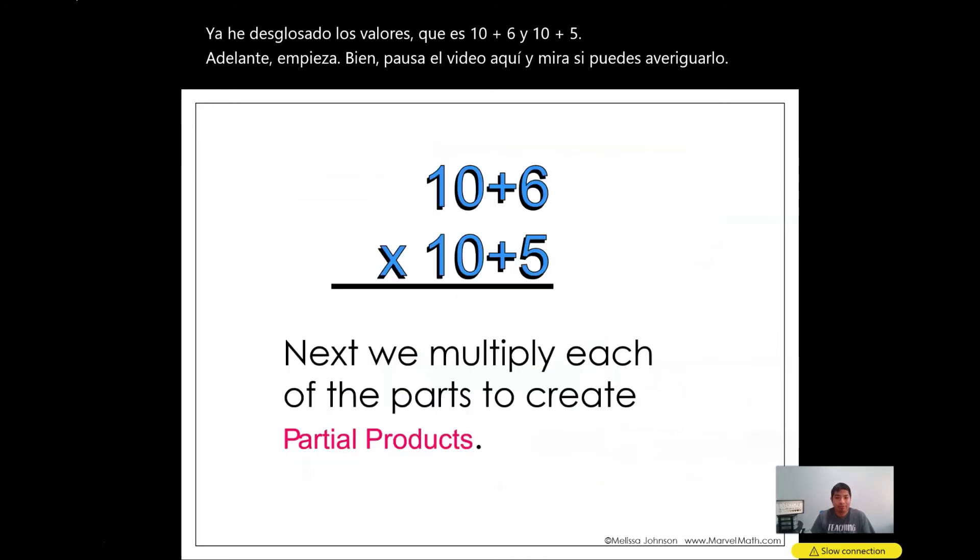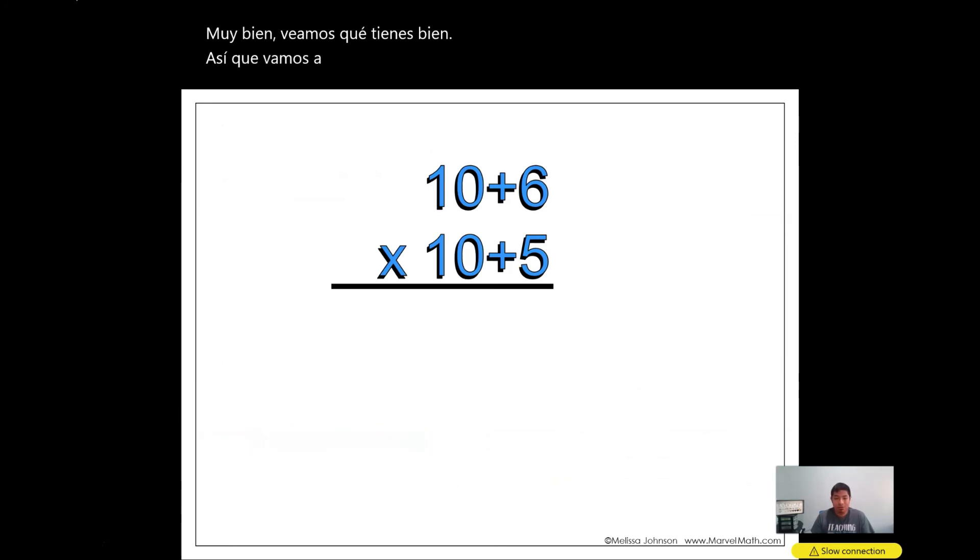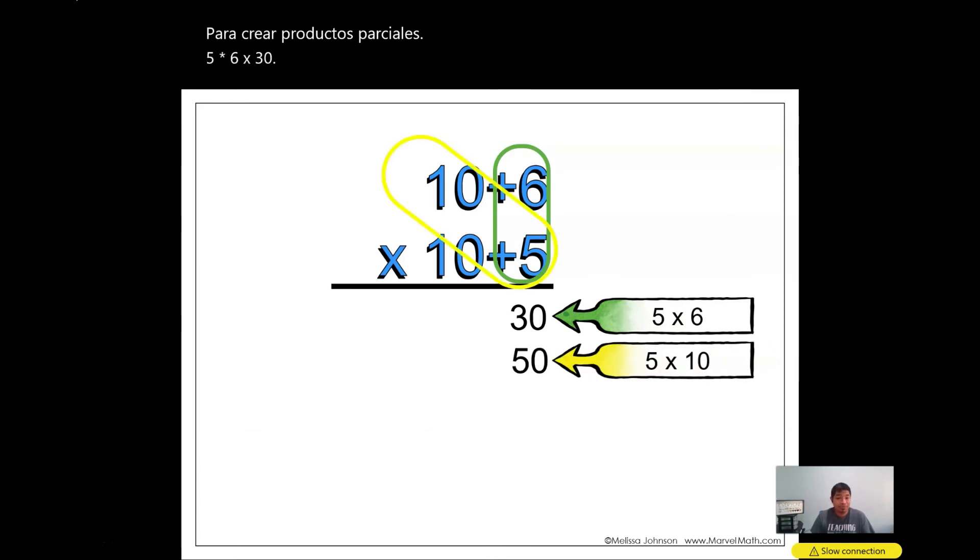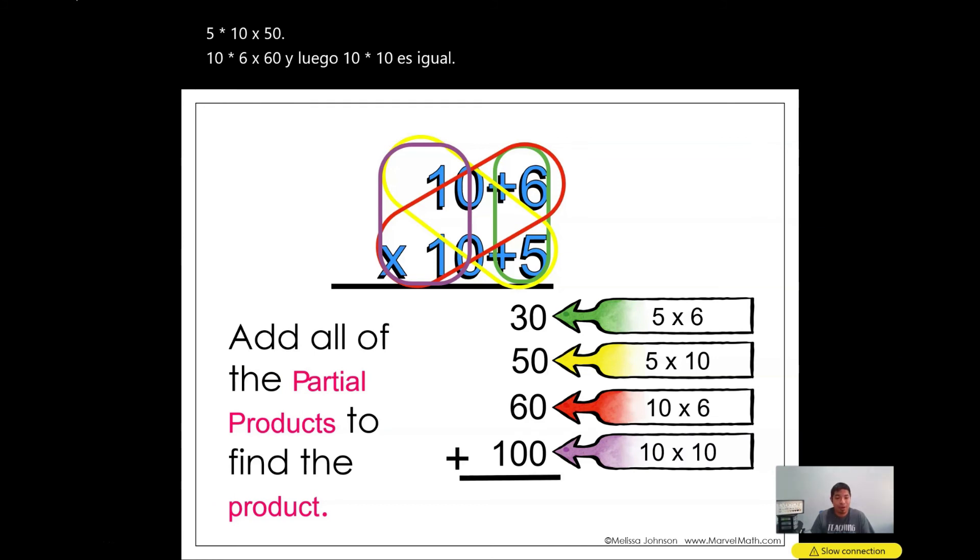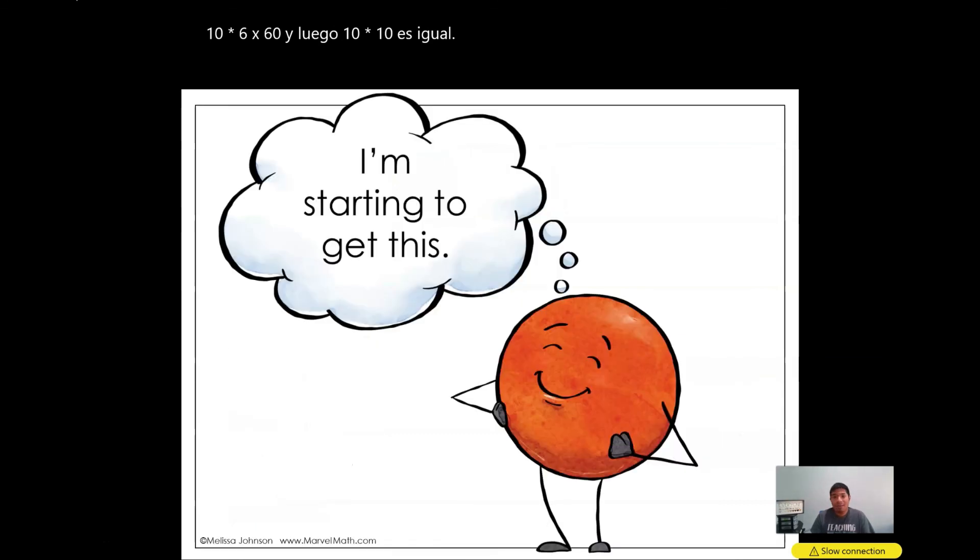Alright, let's see what you got. So we're gonna multiply the values now to create partial products. 5 times 6 equals 30. 5 times 10 equals 50. 10 times 6 equals 60. And then 10 times 10 equals 100. Now we just gotta add all the partial products to find the product, and this equals 240. Good job! So that's how we do partial products. I hope this helps. Have a good day. Bye!